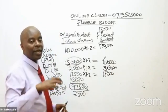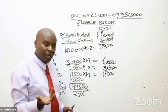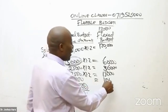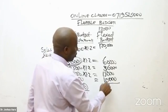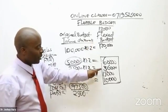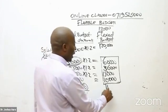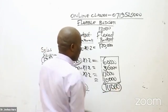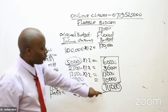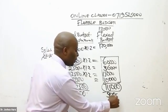For fixed overheads, as the name suggests, these are items that cannot flex — they are constant. So we simply transfer the fixed overhead of $10,000 as it is. The total cost in the flexed budget is $115,000. Subtracting this from revenue of $120,000 gives a flexed budget profit of $5,000.